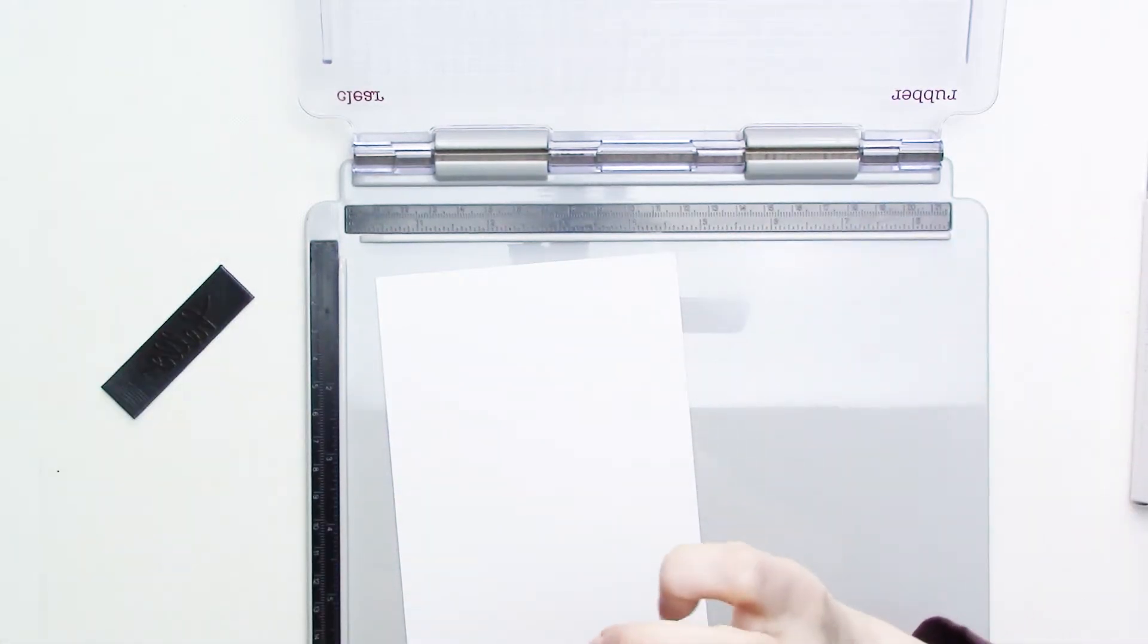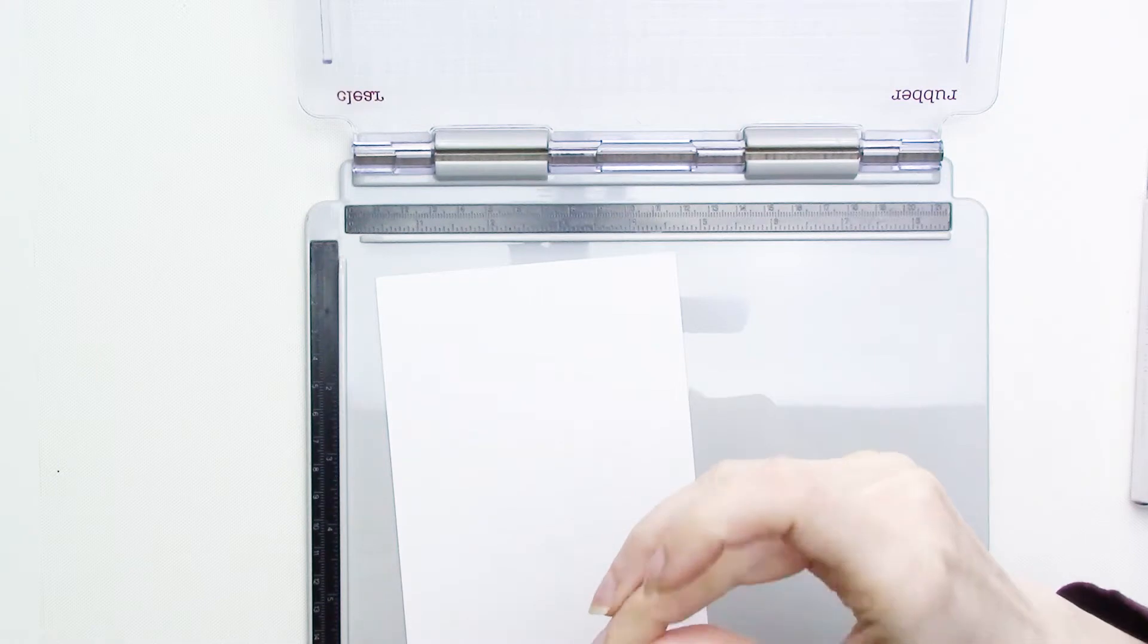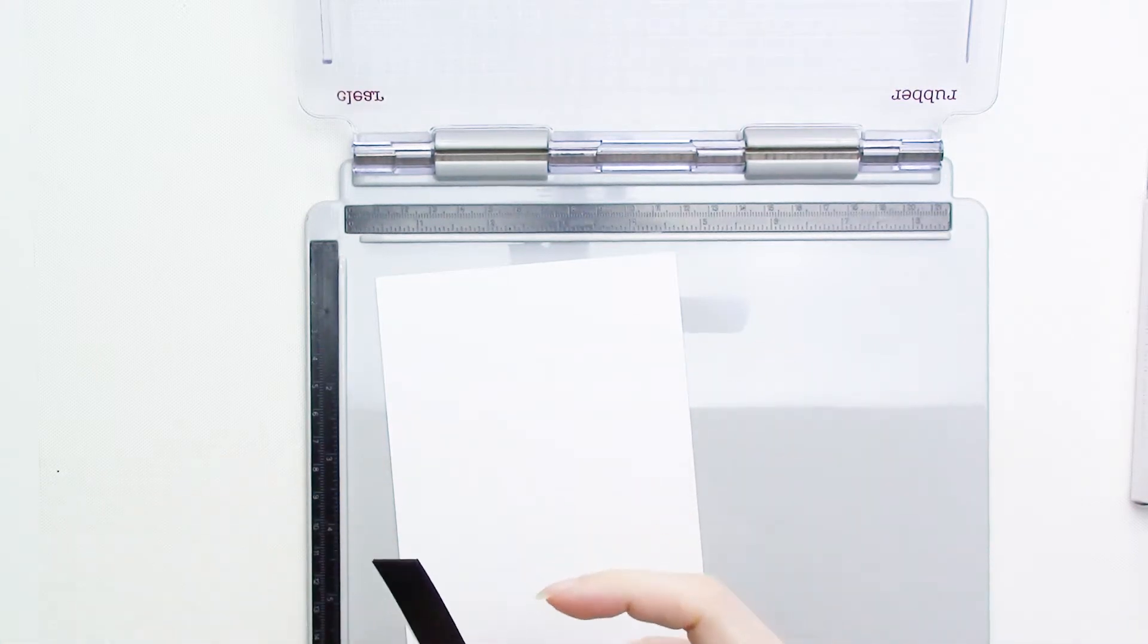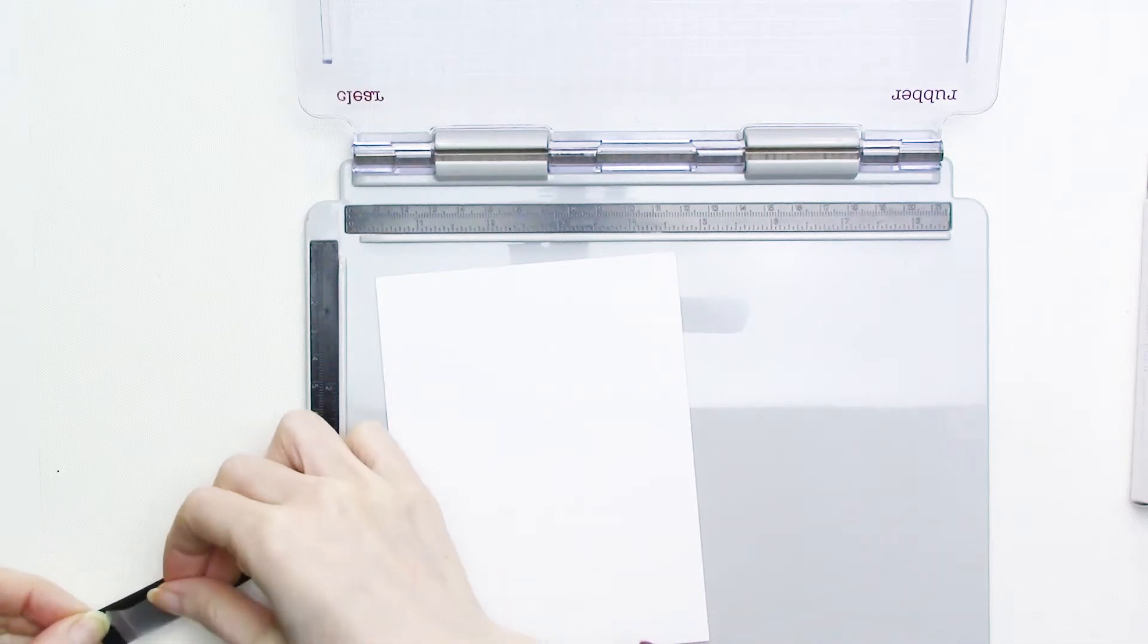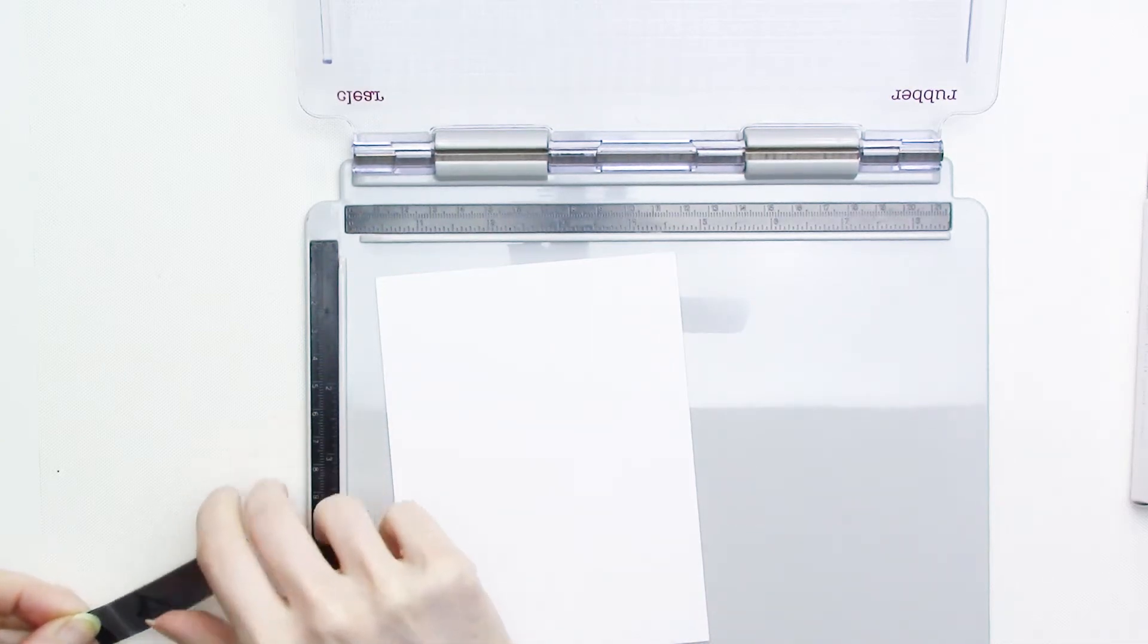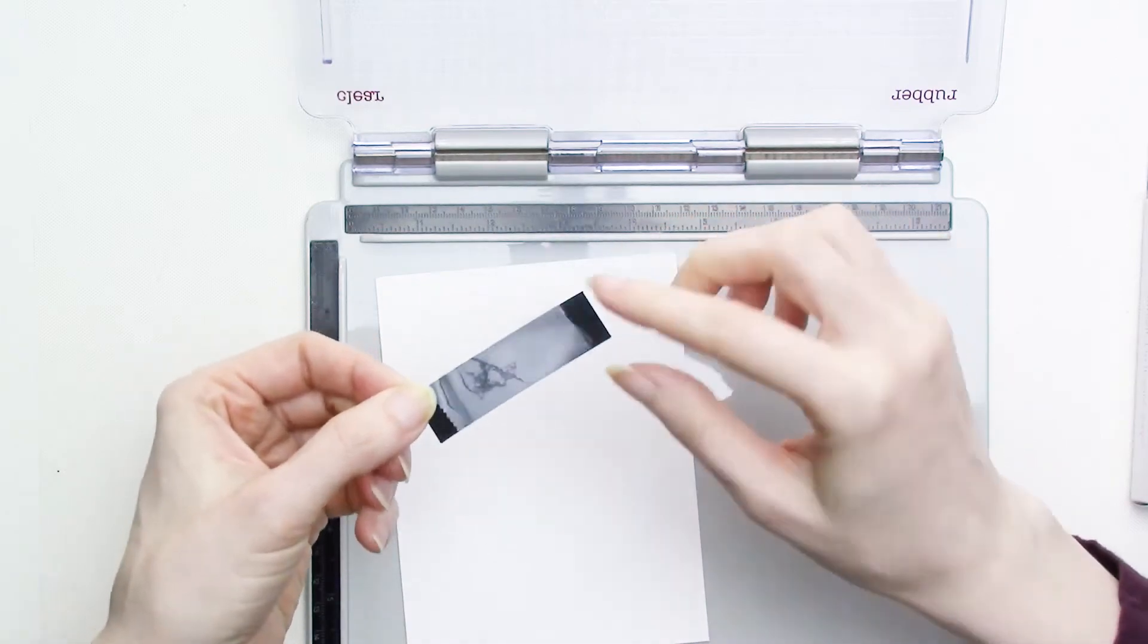But before we get to that, we need to mount the stamp onto the lid of the stamp platform. The lid of the platform that I'm using has two sides and I'll be using the clear stamp side since it's a little bit thicker. I'm going to add a piece of removable double-sided tape to the back of the stamp to temporarily adhere it to the lid of the platform.